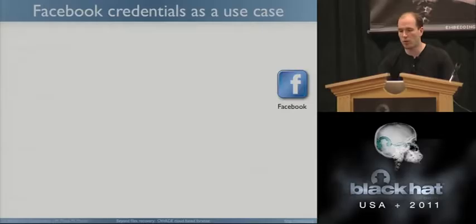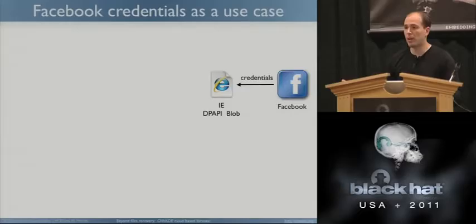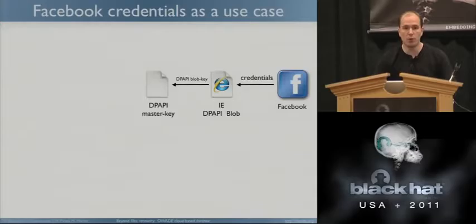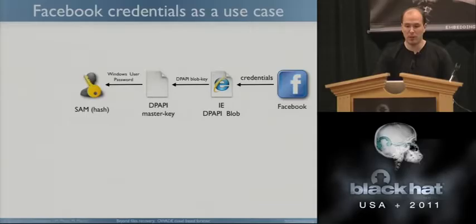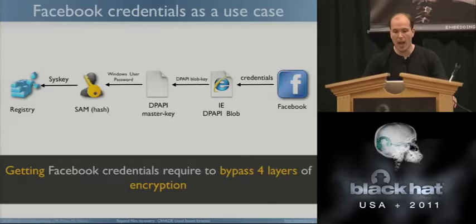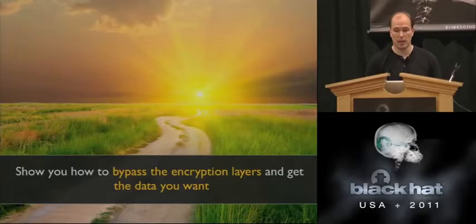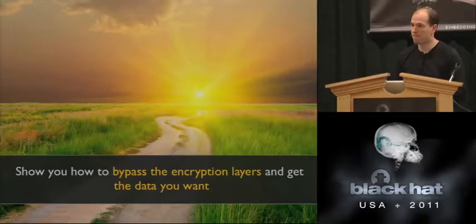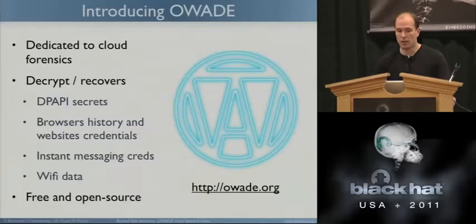Let me give you an example of why it's hard. Assume I want to know who someone is on Facebook. I get a hard drive and I know this person uses Facebook, but I need to know who it is. The Facebook credentials are probably stored in the IE Password Manager, which is encrypted with DPAPI. To decrypt that, I have to decrypt the DPAPI master key. To decrypt the DPAPI master key, I have to decrypt the Windows password, and to do that I have to decrypt the SAM. We need to bypass four layers of encryption to get the Facebook credential from the hard drive.